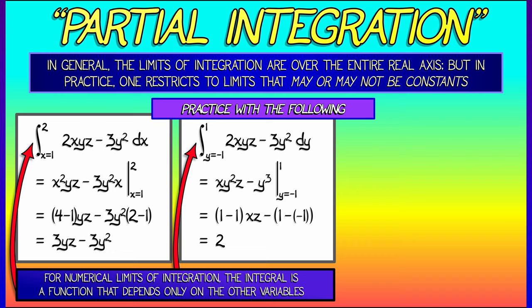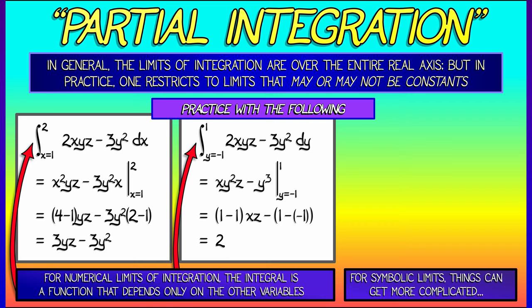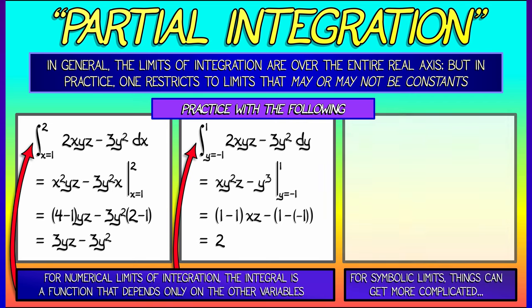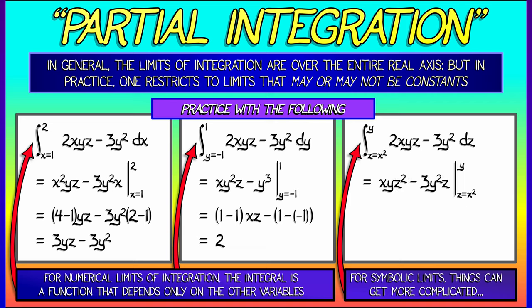Consider what happens when we take the same integrand 2xyz minus 3y², but now integrate it with respect to z as z goes from x² to y. The process is exactly the same: we anti-differentiate with respect to z, giving us xyz² minus 3y²z. Now we evaluate this as z goes from x² to y — plugging in z equals y, then subtracting what we get when z equals x².